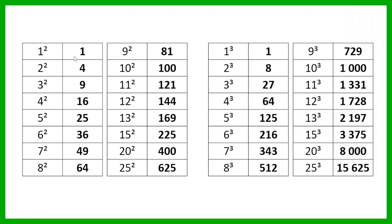1 squared is obviously 1, 2 squared is 4, 3 squared is 9, 4 squared is 16, 5 squared is 25, 6 squared is 36, 7 squared is 49, 8 squared is 64, 9 squared is 81, 10 squared is 100, 11 squared is 121, 12 squared is 144, 13 squared is 169, 15 squared is 225, 20 squared is 400 and 25 squared is 625. So those are all square numbers that we've already learned about.